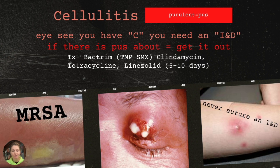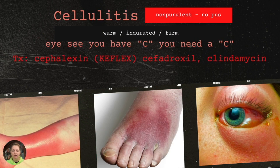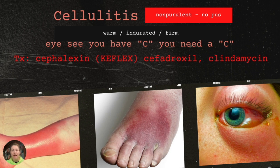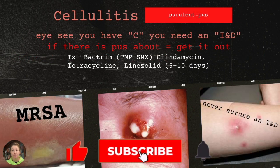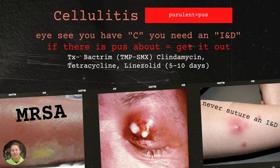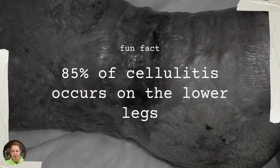I've included some pictures so you can truly differentiate between the two. As a reference: non-purulent — 'I see you have a C, so you need a C' — cephalexin, cefadroxil, and clindamycin. Purulent — 'if there's pus about, get it out, I see you have a C, you need an IND.' As a fun fact, 85% of cellulitis occurs on the lower leg. So while we know we can have periorbital cellulitis, most of the time we'll see it on the lower legs.